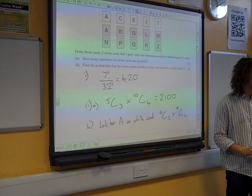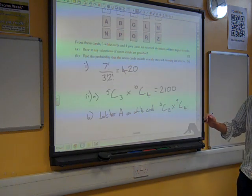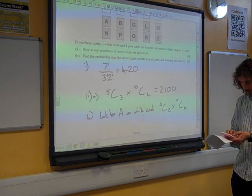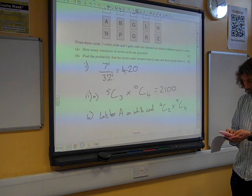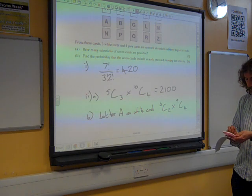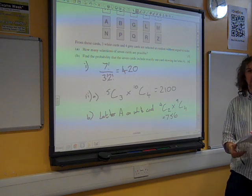So the number of ways that we could have chosen the letter A on the white card is 4C2 times 9C4, which gives us 756 possible ways of doing it.